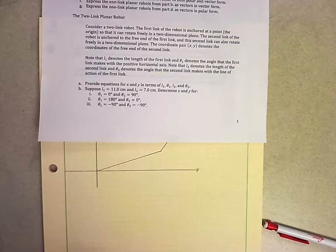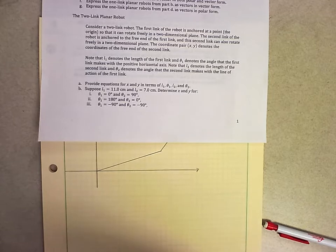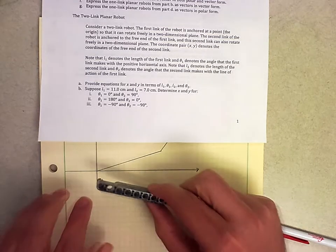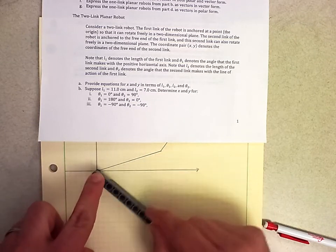Okay, so we're talking about the two-link planar robot. We consider a two-link planar robot where the first link is anchored at a point in the origin so that it can rotate freely in a two-dimensional plane.